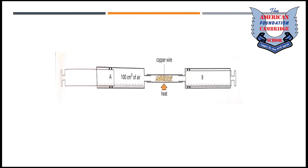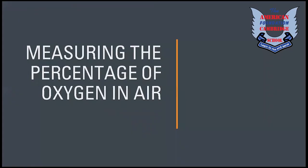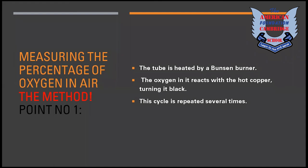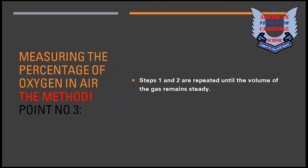When syringe A is empty, syringe B's plunger is pushed, forcing the air back to A. This cycle repeats several times. The steps are repeated until the volume of the gas remains steady, meaning all the oxygen has been used up. The final volume is noted. The tube was heated for about three minutes and the apparatus was allowed to cool. All the gas was pushed into one syringe and the volume was measured — obviously the volume will be less than 100 cm³.